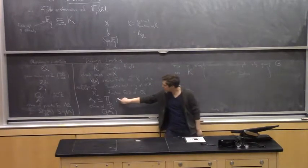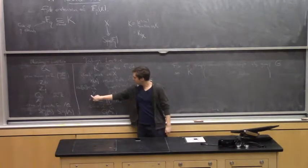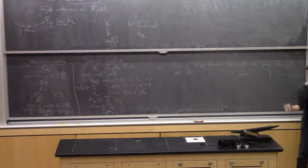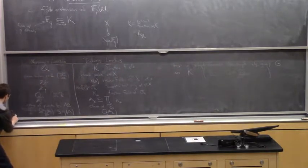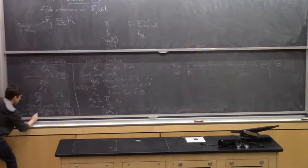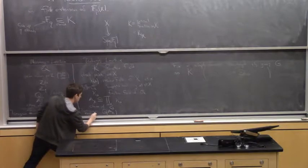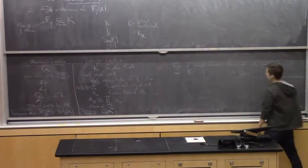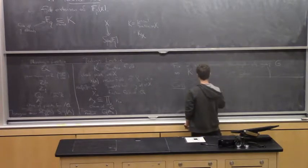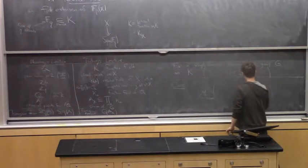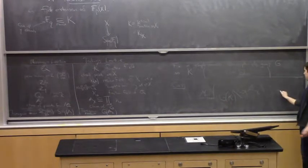This ring of adeles has a topology coming from multiplying together the topologies of all the local fields, making it into a locally compact ring, and therefore this group into a locally compact group. Just as in Monday's lecture, it comes with a canonical measure — there's a Tamagawa measure on this group. The Tamagawa number conjecture, in the function field case, would say that if you take the Tamagawa measure of this locally compact group modulo the action of G(k), which sits inside as a discrete subgroup, this is equal to 1.